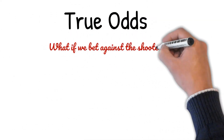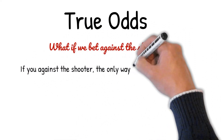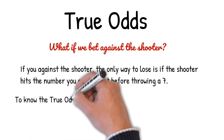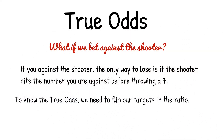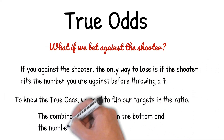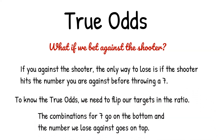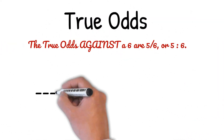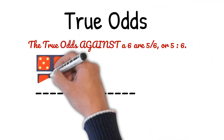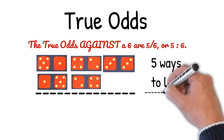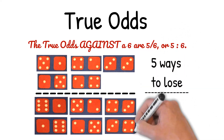What if we bet against the shooter? If you bet against the shooter, the only way to lose is if the shooter hits the number you are against before throwing a 7. To know the true odds, we need to flip our targets in the ratio — the combinations for 7 go on the bottom, and the number we lose against goes on the top. The true odds against a 6 are 5 to 6, or 5 to 6 as a ratio: you have 5 ways to lose and 6 ways to win.